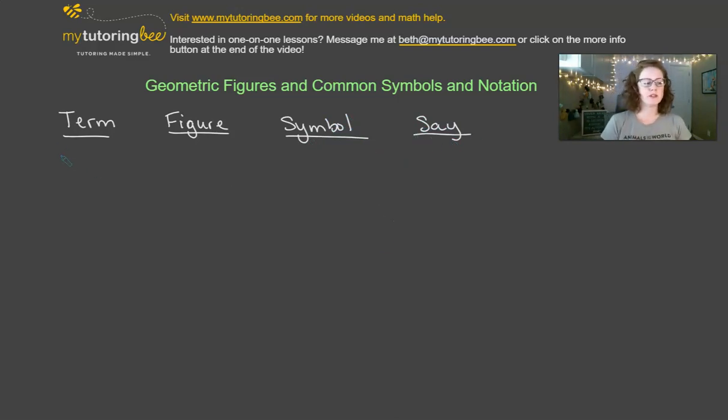The first term that we're going to talk about is a point. So our point, the figure, just simply looks like this. It is a point. It is usually labeled with some letter, and so our symbol for this is actually just going to be the letter itself, and then we would say point B. Pretty straightforward.